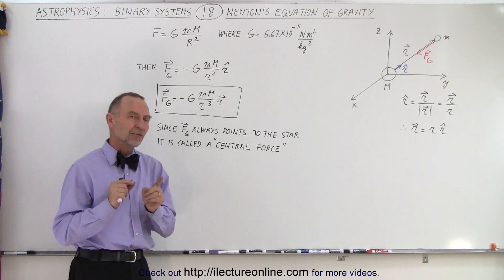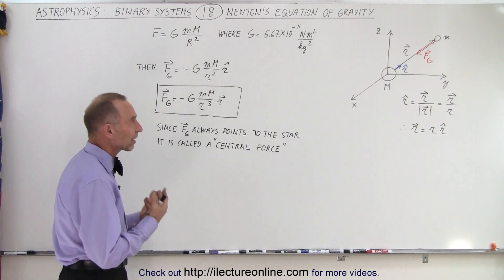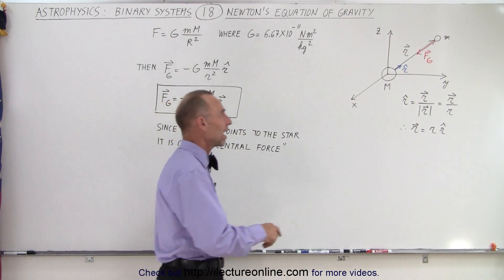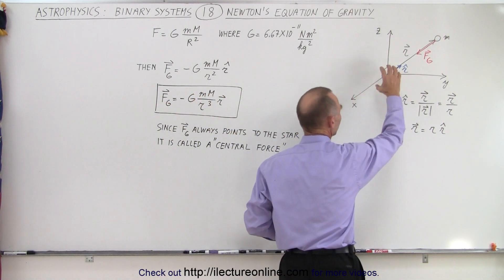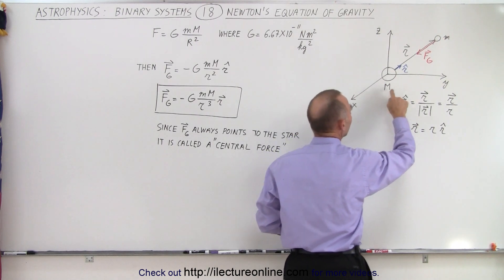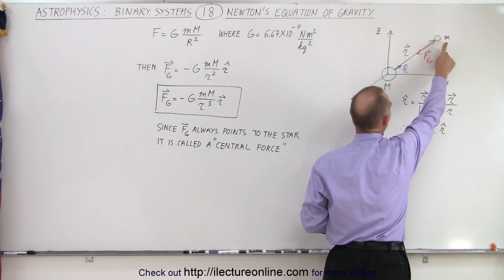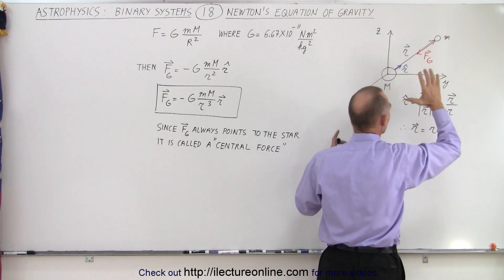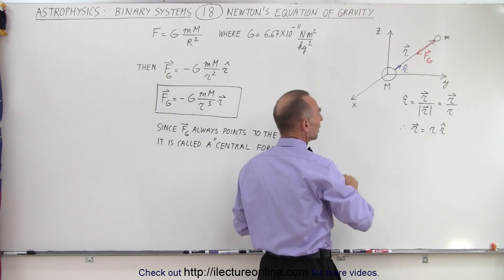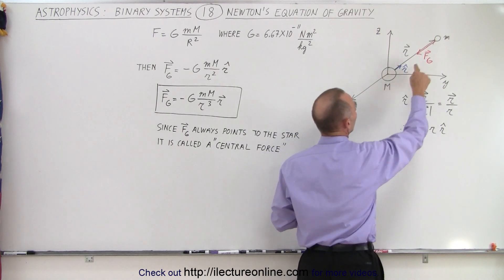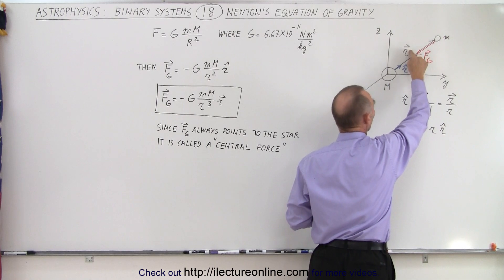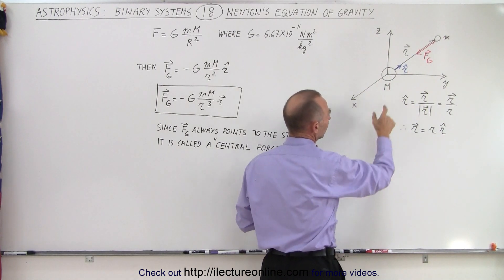But we can look at it differently in terms of vector quantities. So imagine that we have the sun or a star at the center with a large mass M and a smaller planet with a small mass m some distance away in three-dimensional space. The position vector from the sun to the planet is known as R, and that's indicated as the position vector.